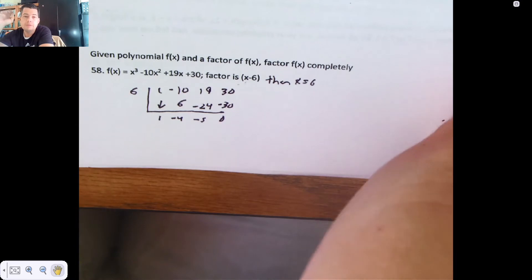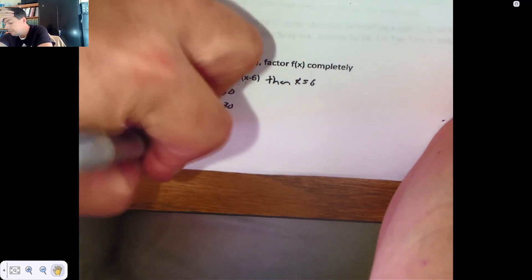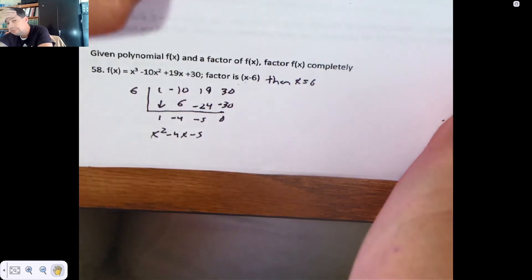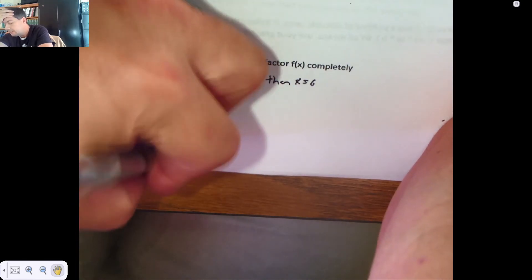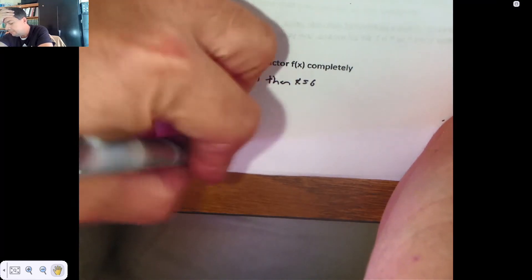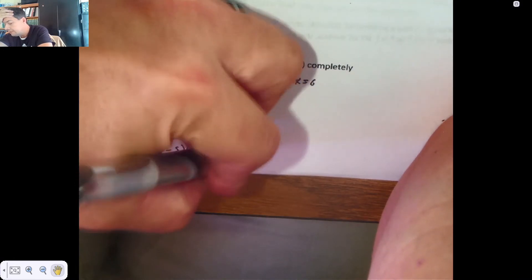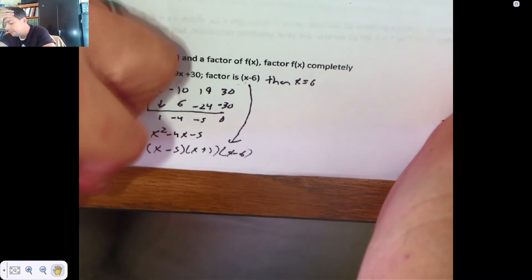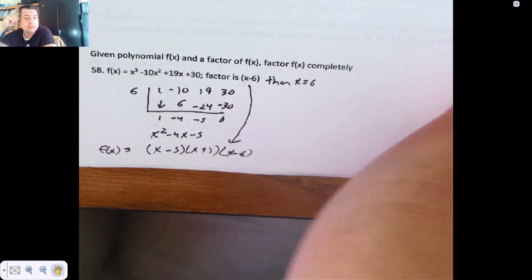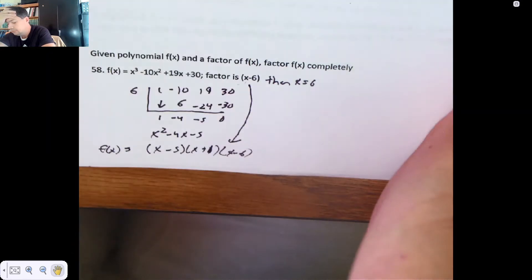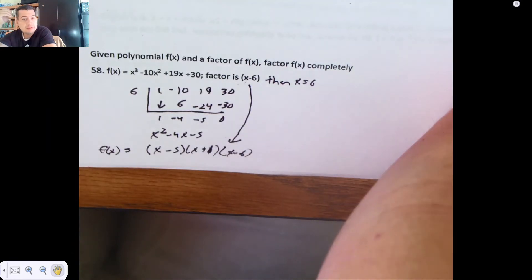So what we've done is we've factored out x minus 6, and we're left with x squared minus 4x minus 5, which factors as x minus 5 and x plus 1. And then I bring down my known factor, x minus 6, and that is the factored version of f(x). x minus 5 times x plus 1 times x minus 6.